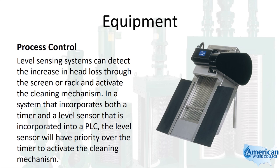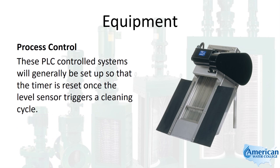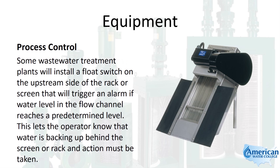Level sensing systems can detect the increase in head loss through the screen or rack and activate the cleaning mechanism. In a system incorporating both a timer and a level sensor within a PLC, the level sensor will have priority over the timer. These PLC-controlled systems are set up so that the timer resets once the level sensor triggers a cleaning cycle. Some plants install a float switch on the upstream side that triggers an alarm if water level reaches a predetermined level, alerting the operator that water is backing up behind the screen or rack.